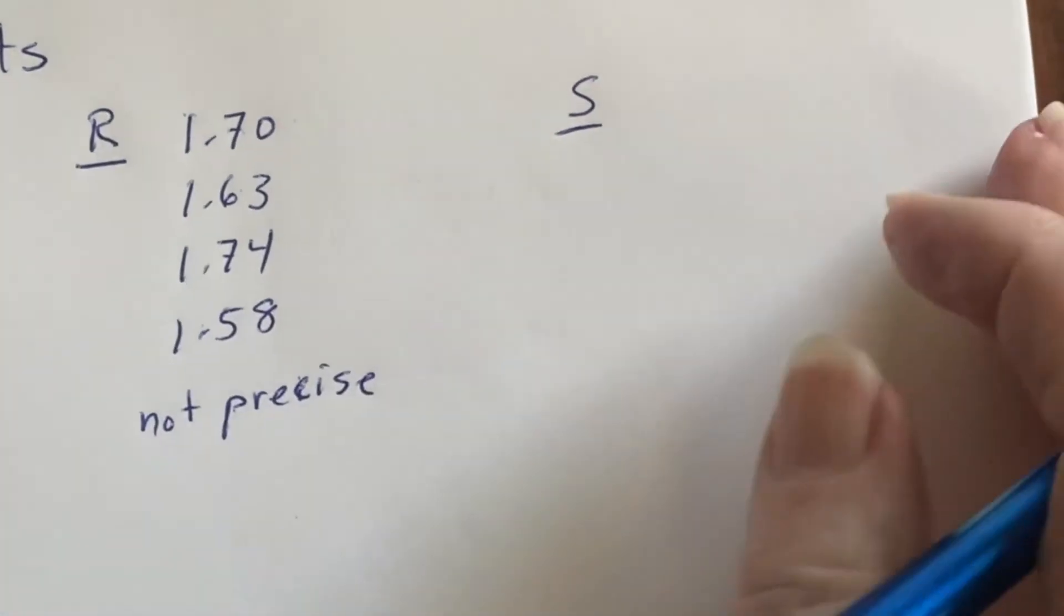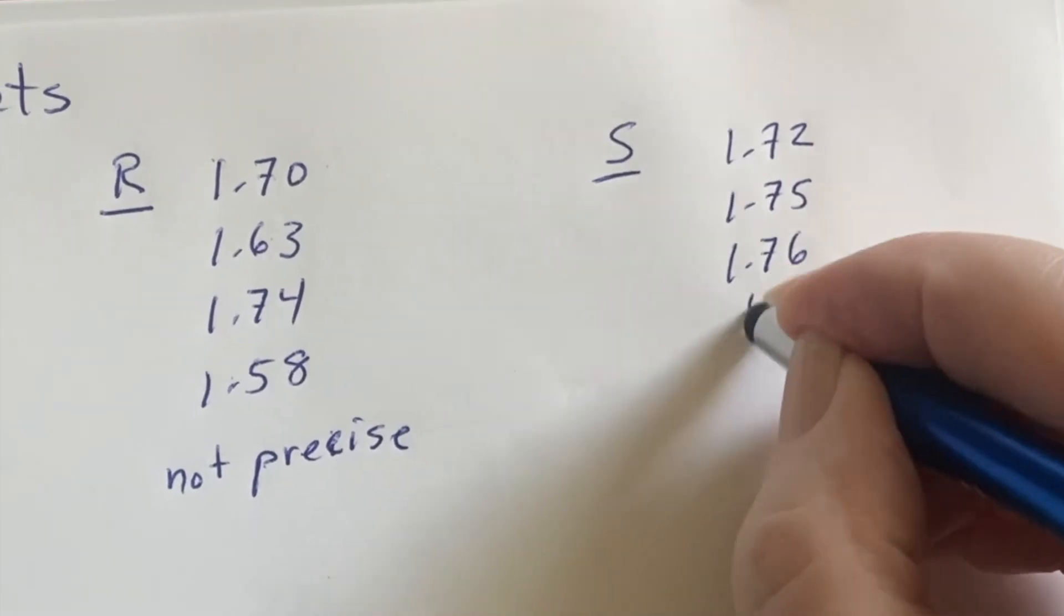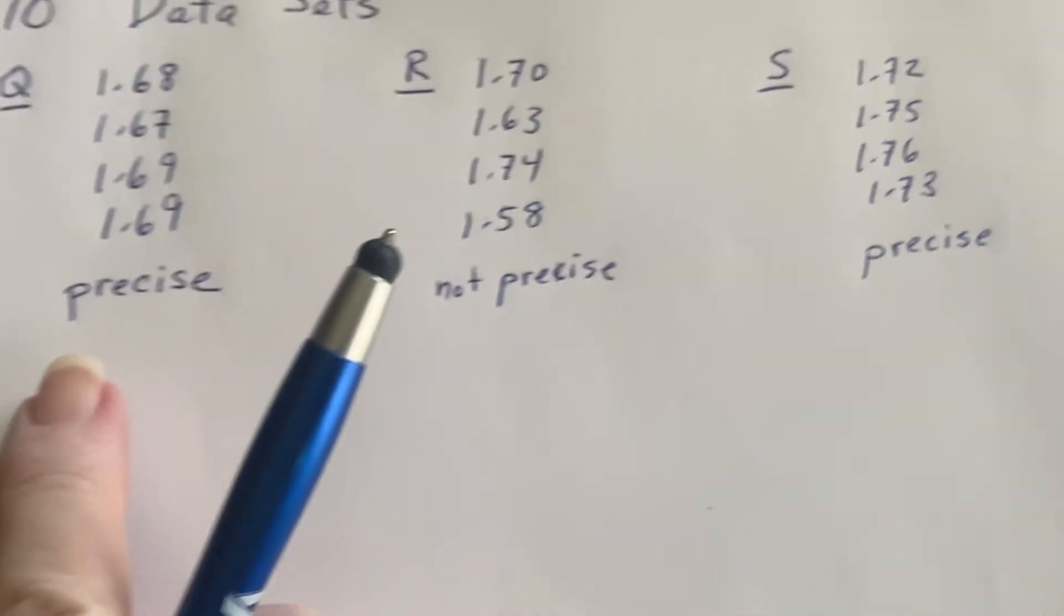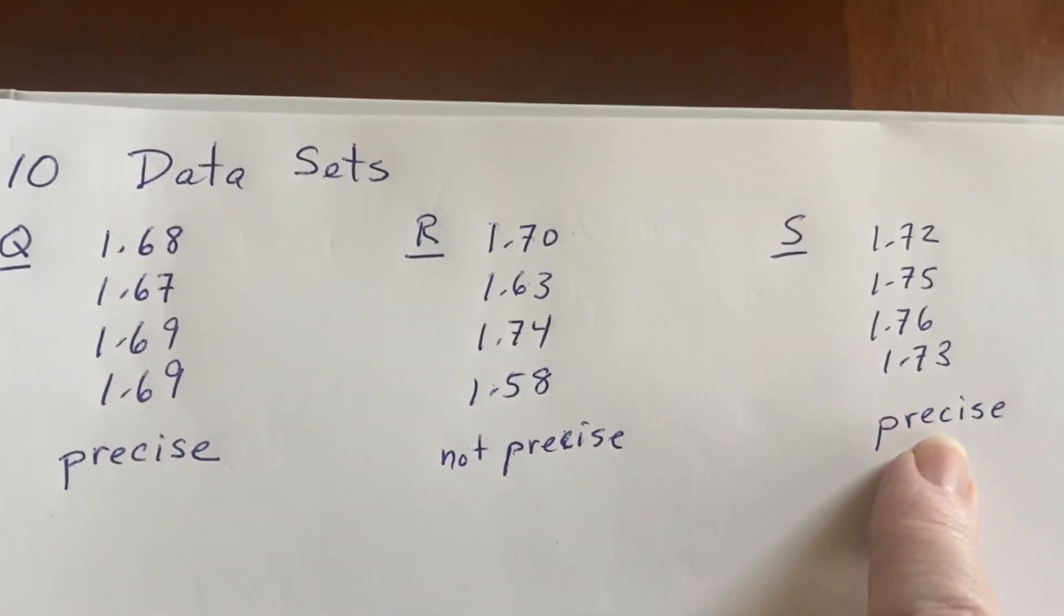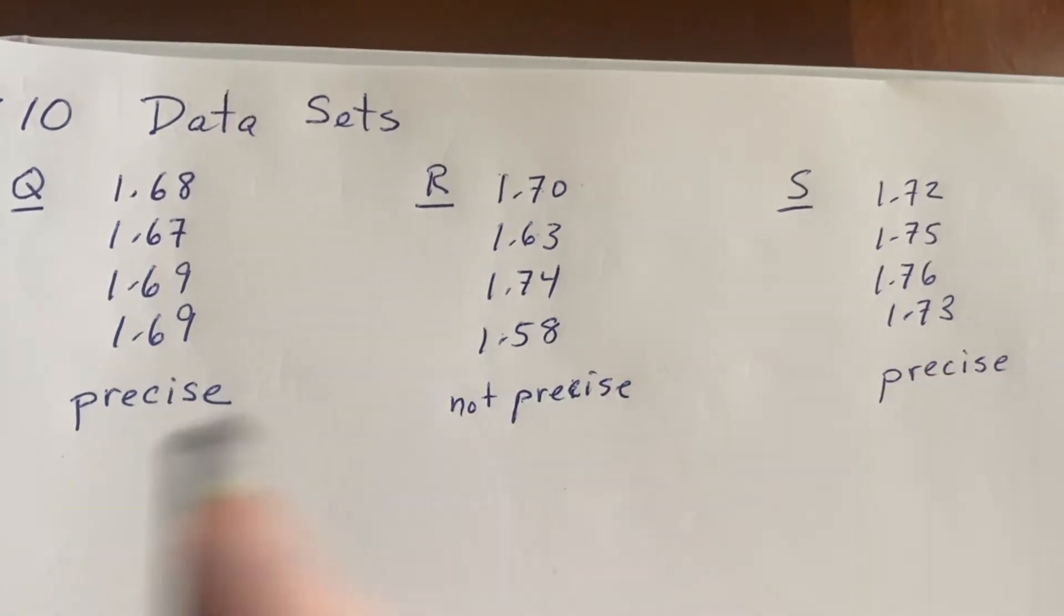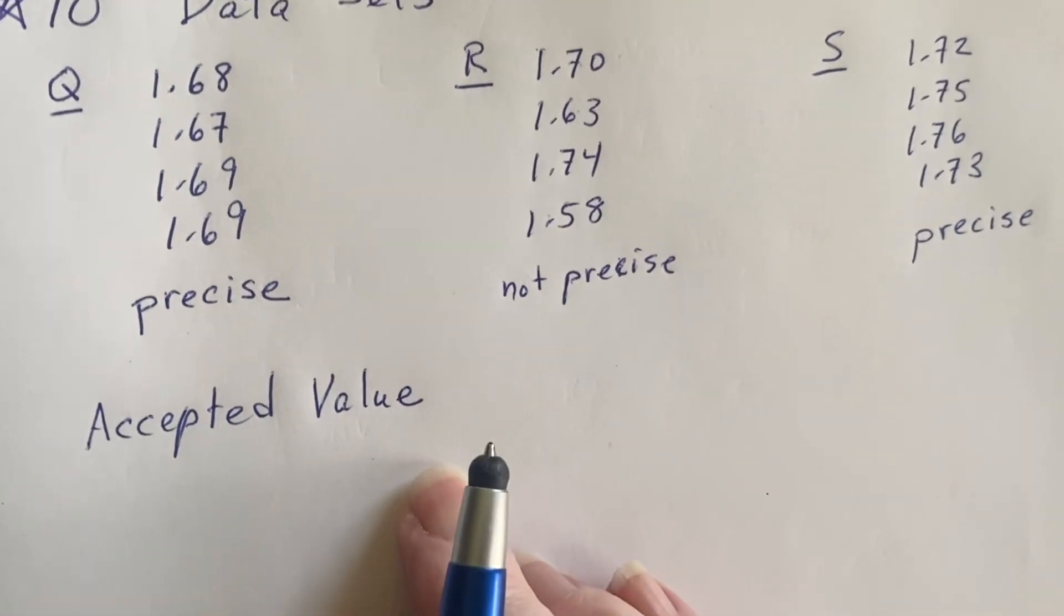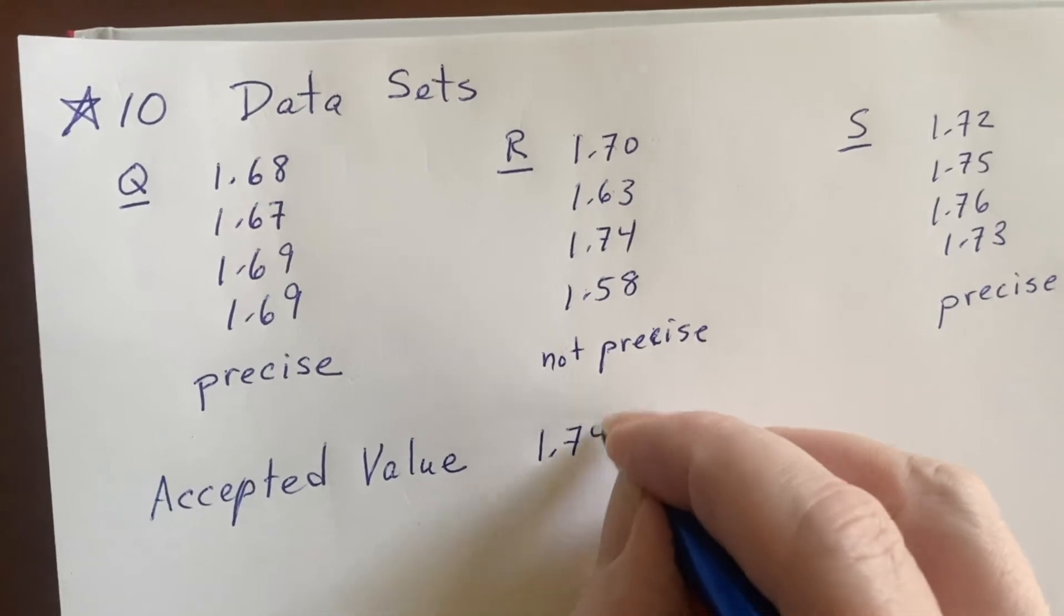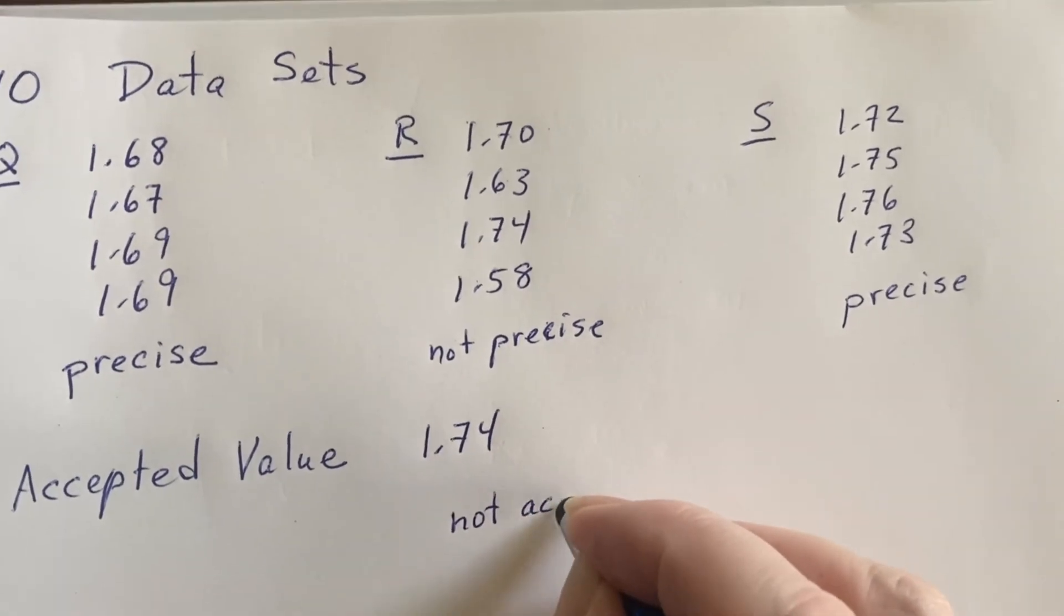Then one more grouping. This person got 1.72, 1.75, 1.76, and 1.73. This one is also precise. They're all nicely grouped together. But these guys were all working on the same experiment. So this is precise and this is precise. But these are giving you two different sorts of answers. That brings us to how about this other thing about accuracy? Well, you can't judge accuracy until you know what the accepted value is. Now we'll be able to go back and judge the accuracy as well as the precision. So we find out the accepted value for this is 1.74. Oh, my. This is not precise. So, hey, it's not going to be accurate. It just isn't. That's the way we want you to view it. So it's not accurate.